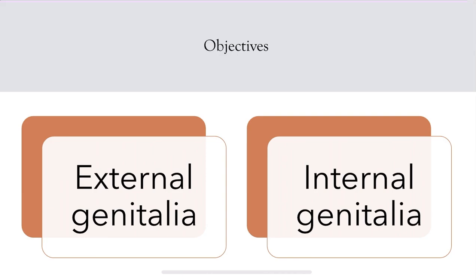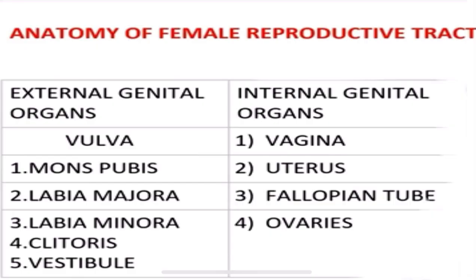External genitalia and internal genitalia. External genital organs — the synonym is vulva or pudenda — comprise the mons pubis, labia majora, labia minora, clitoris, and vestibule. Internal genital organs are vagina, uterus, fallopian tube and ovaries. We'll be dealing about each one of these parts in detail in the upcoming slides.